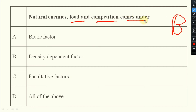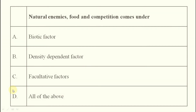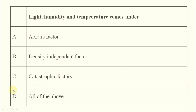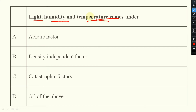Natural enemies, food, and competition — these are your biotic factors, so they come under biotic factor, density-dependent factor, and facultative factor — all of the above is the right answer. Light, humidity, and temperature come under abiotic factor, density-independent factor, and catastrophic factor — all of the above, same thing.